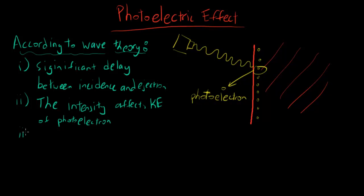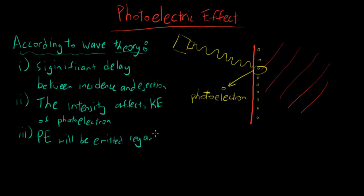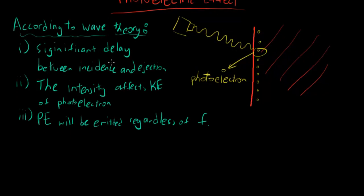And thirdly, that the photoelectrons will be emitted regardless of the frequency of the incident light, as long as the intensity of the light was high enough. Photoelectrons will be emitted regardless of frequency. But what happened was when experiments were conducted, it turned out that all three of these were false - this one was false, this was false, and this was false.